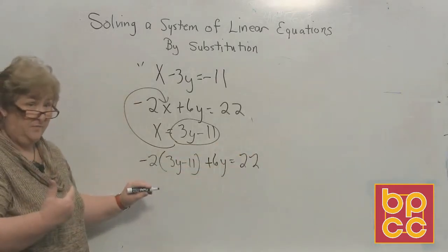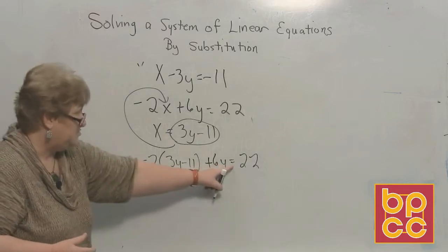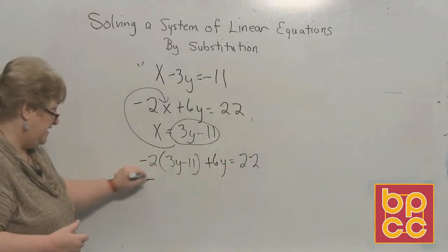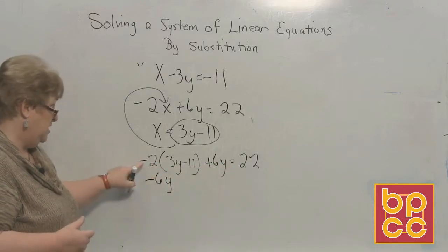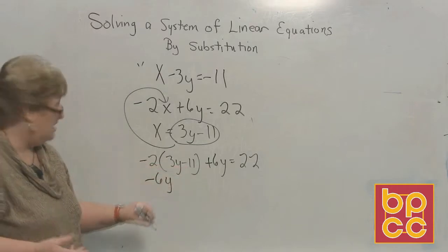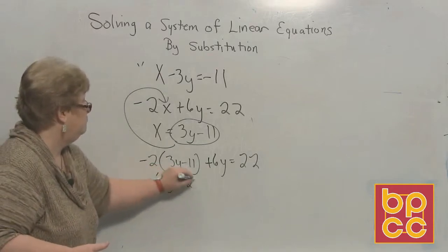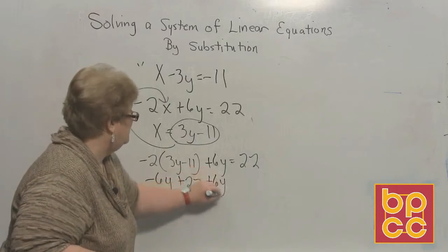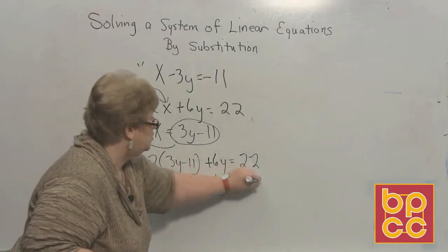We have to distribute. And remember our equal sign is right down here. So we have a negative 6y. We have negative and negative, make a positive 22. Then we have a plus 6y and over here equal 22.